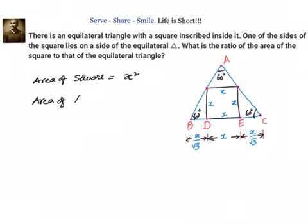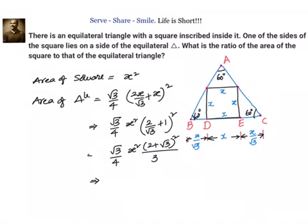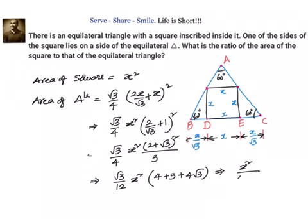The area of the equilateral triangle is root 3 by 4 times side squared. The side of the equilateral triangle is x by root 3 plus x by root 3 plus x, which is 2x by root 3 plus x. Simplifying, the area becomes root 3 by 4 times x squared into 2 by root 3 plus 1 whole squared, which equals root 3 by 12 times x squared into 2 plus root 3 whole squared. Expanding, that is 4 plus 3 plus 4 root 3, giving x squared by 4 root 3 into 7 plus 4 root 3.